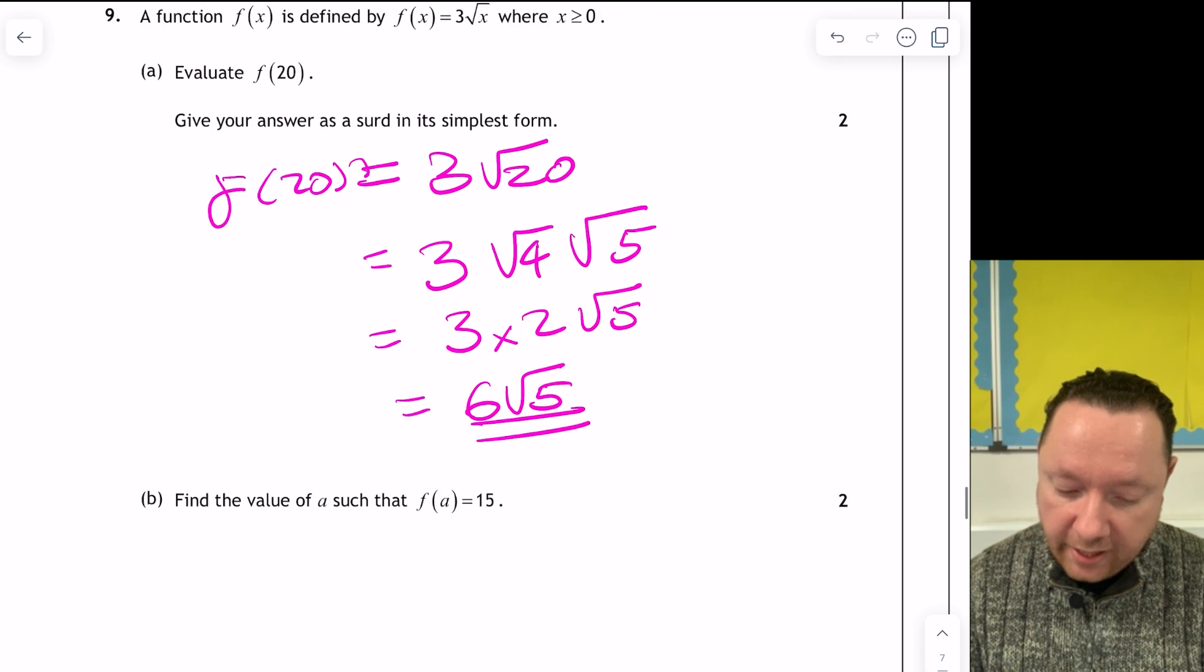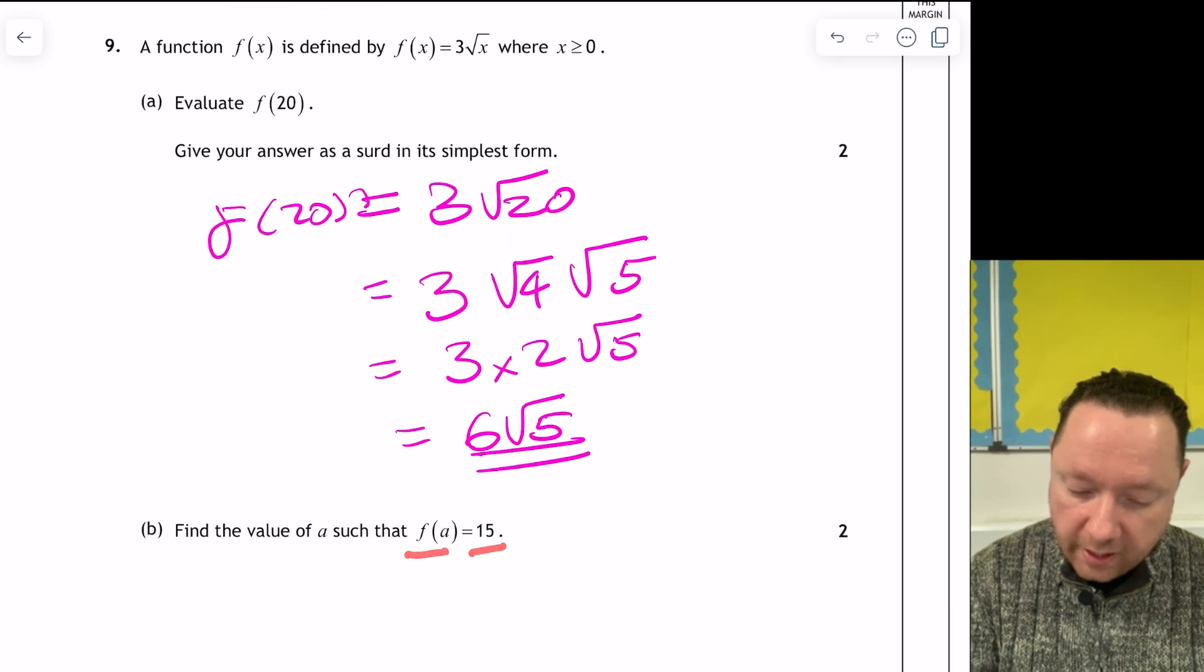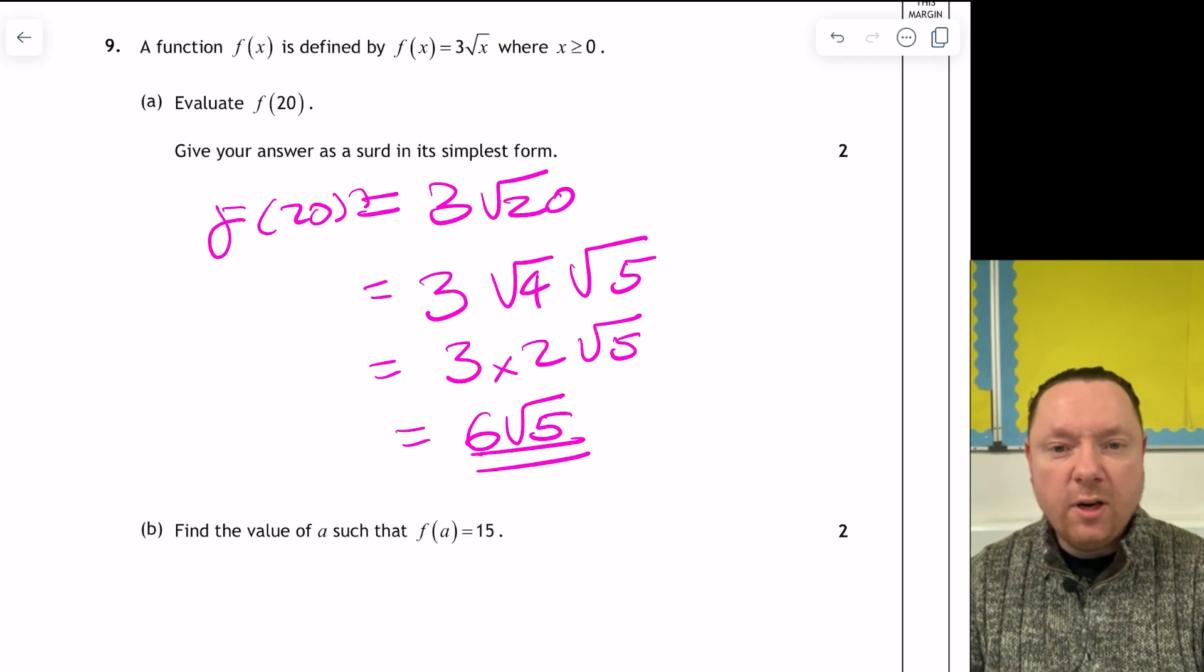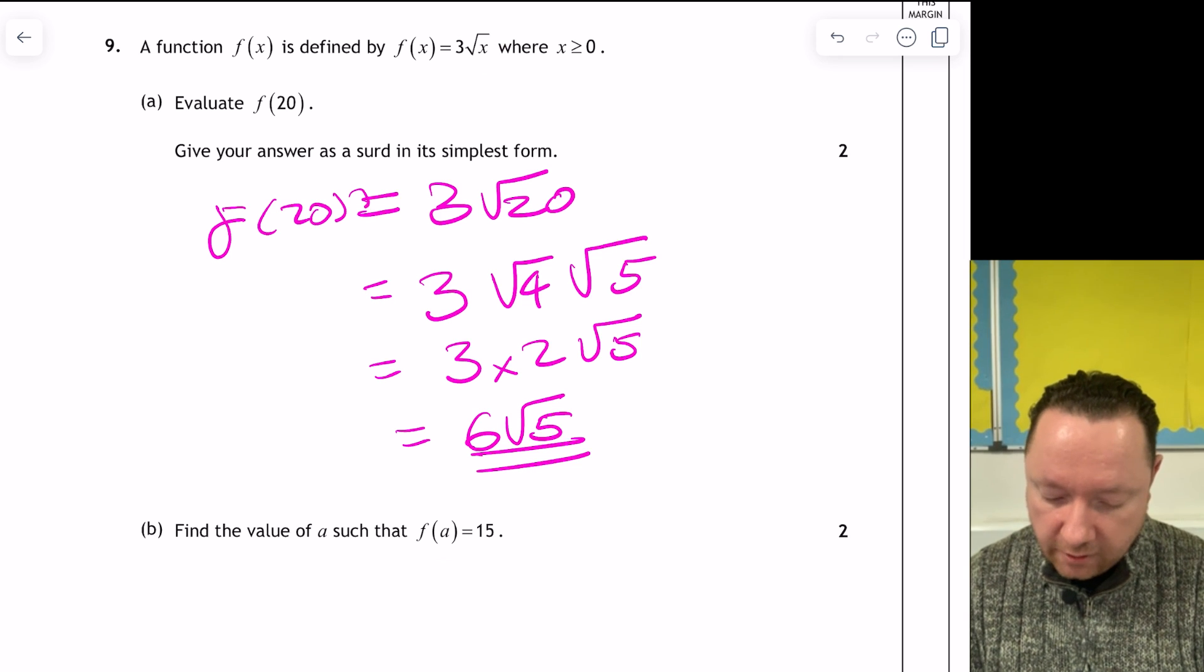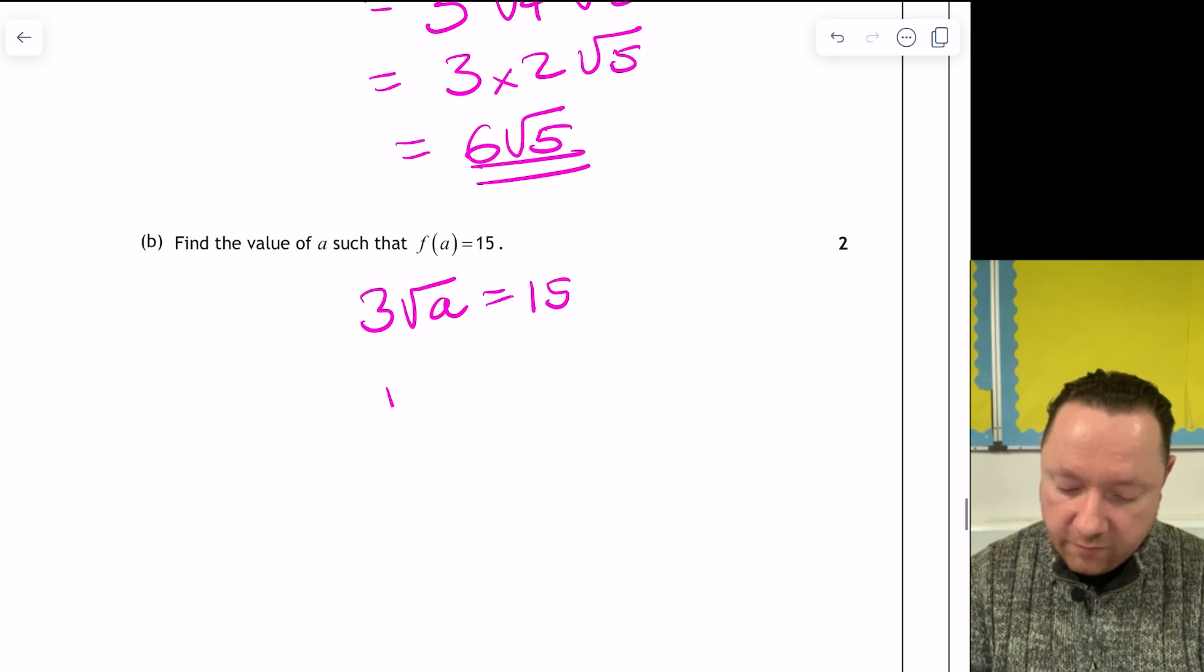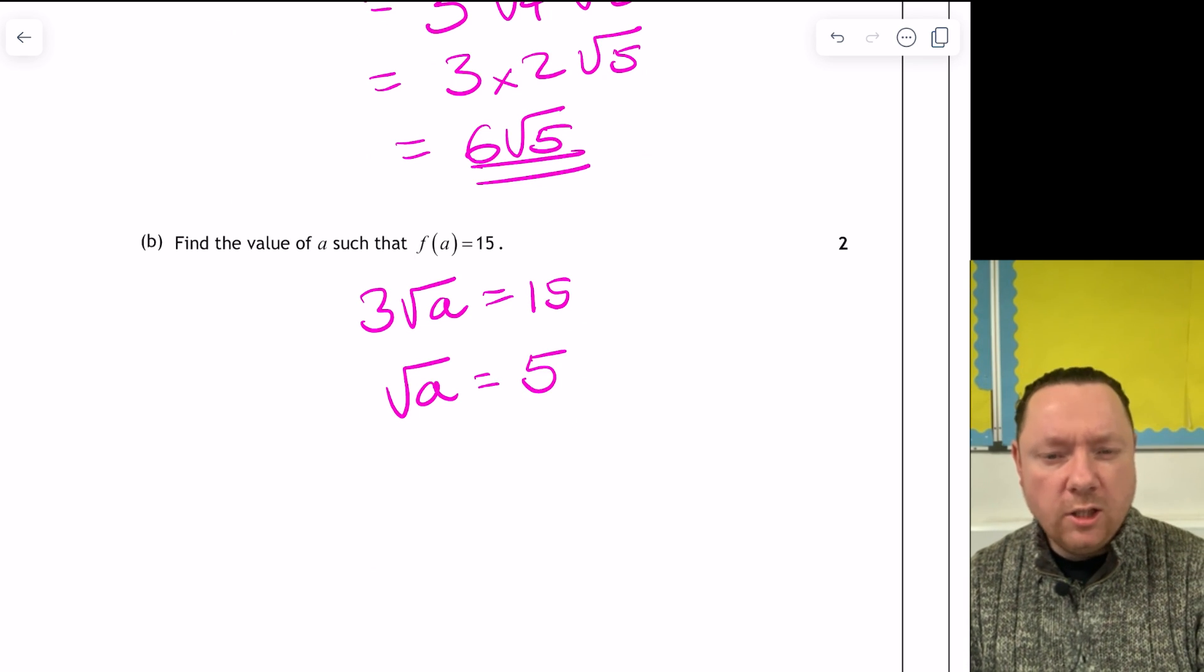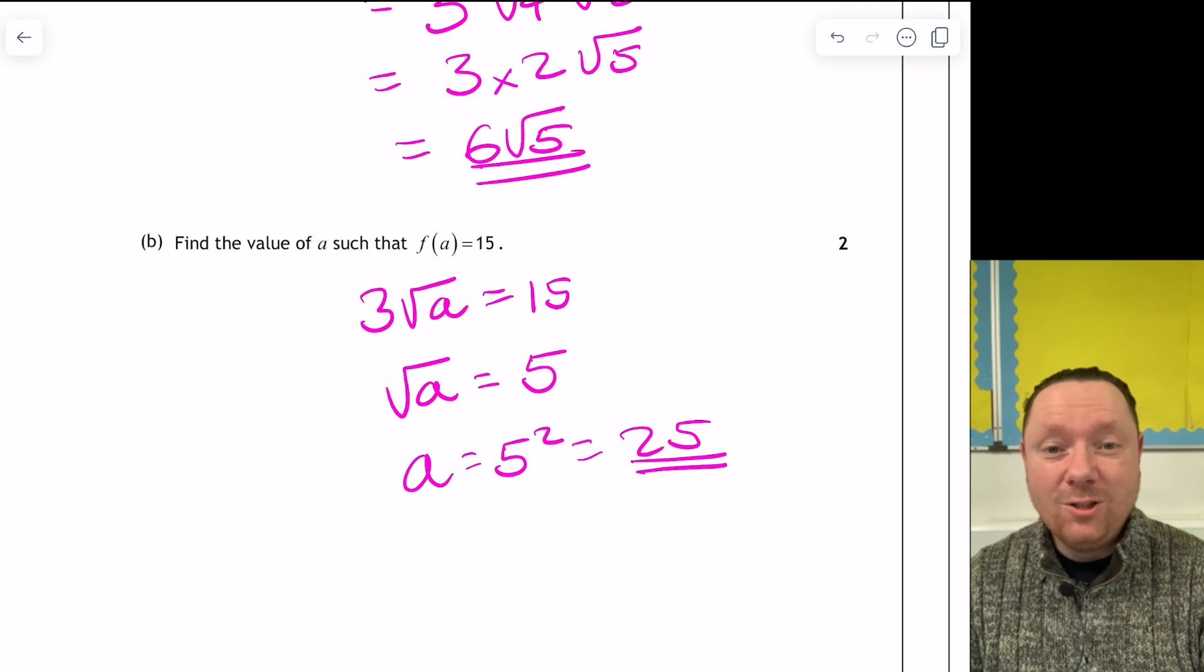Find the value of a such that f of a equals 15. So it says the function equals. So you make this equal 15. So you would usually write 3 root x equals 15, but we've swapped that for an a. So I just write 3 root a equals 15. So I need to solve that. So make root a the subject. 15 divided by 3 is 5. The opposite of the square root is squaring. So a equals 5 squared, which is 25, because 5 times 5.